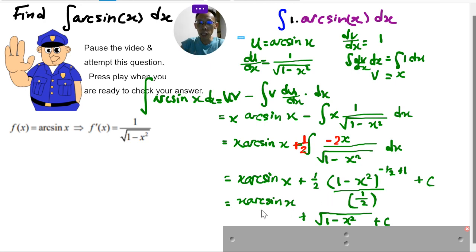Let me pull this thing down here a little bit. All right, so this will be my answer. x arcsin x plus square root of 1 minus x square plus c.